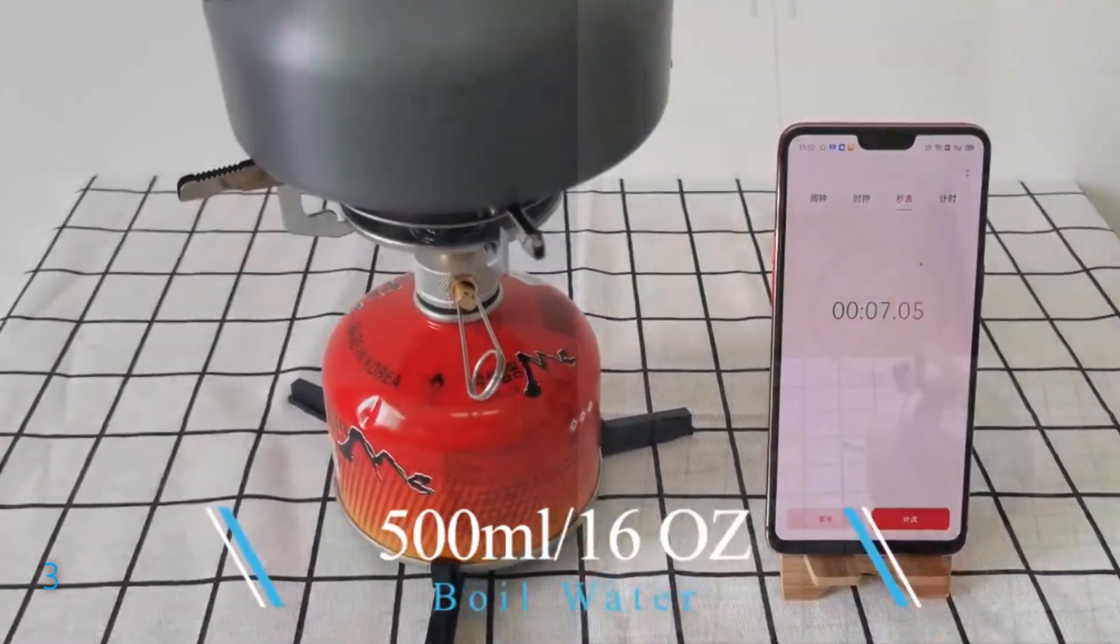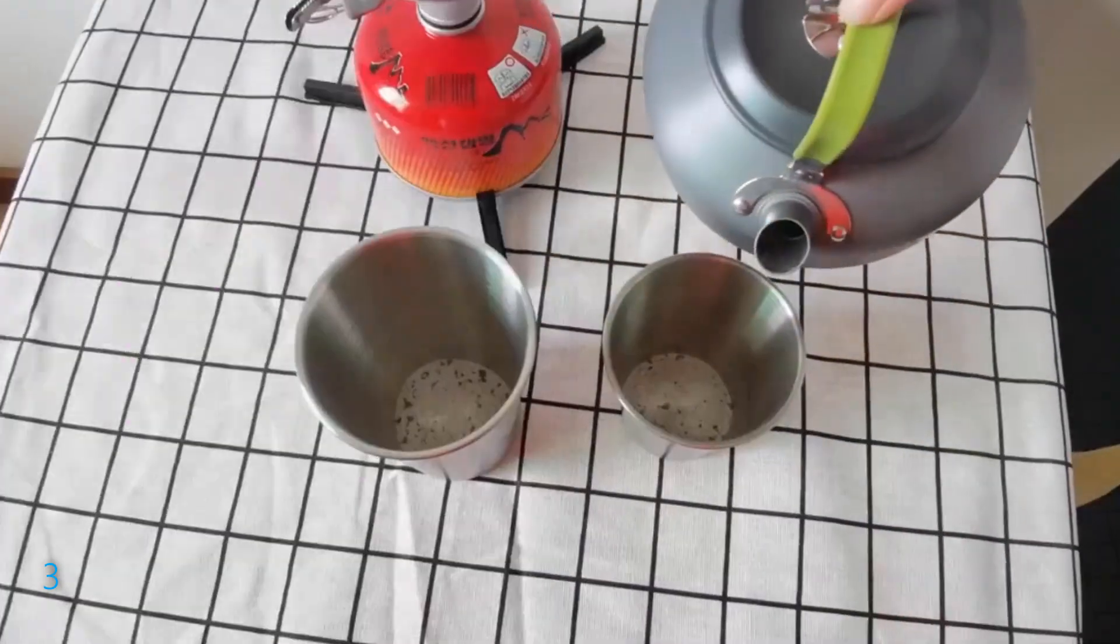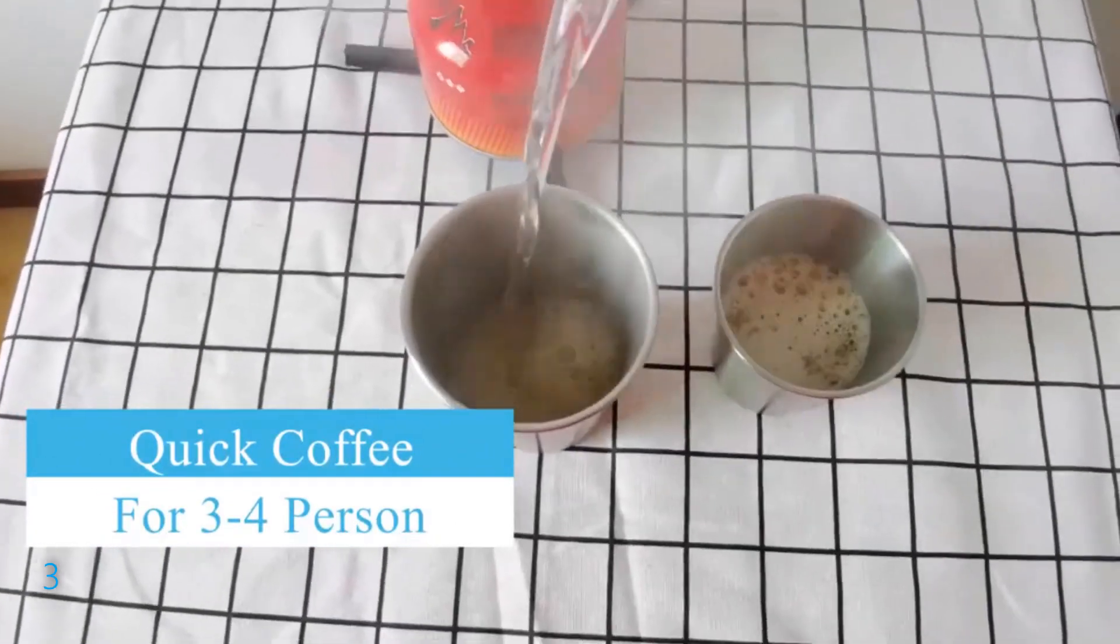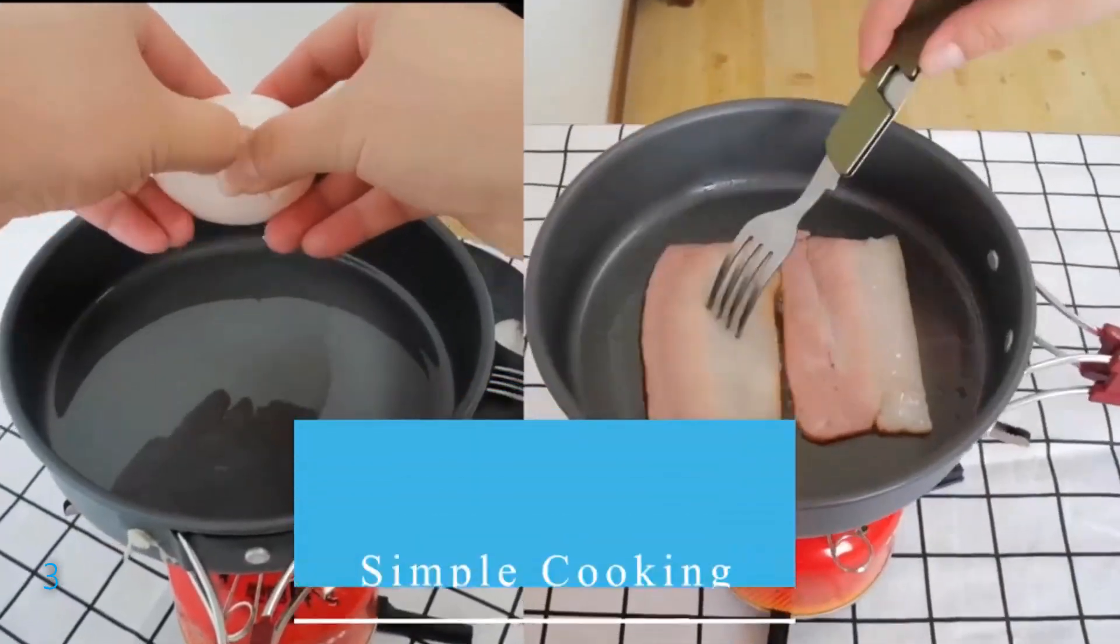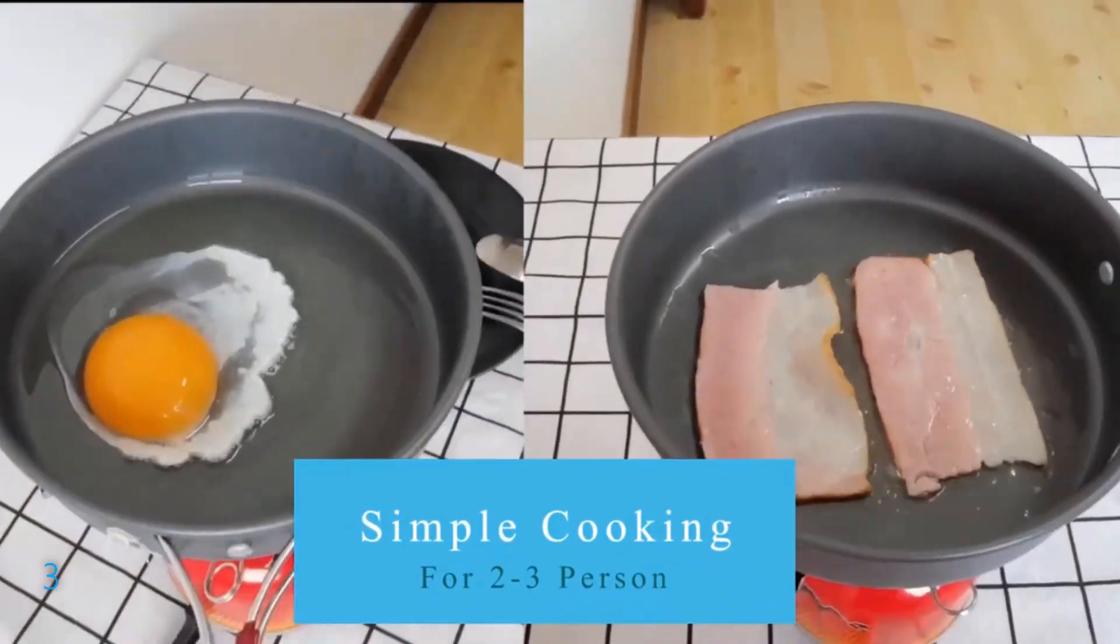Stability is guaranteed with its sturdy platform and wide pot supports, minimizing the risk of tipping. And with its precise flame adjustment feature, you can easily control the heat output for perfectly cooked meals every time. Don't compromise on quality during your outdoor adventures. Choose the Codbler Portable Camping Stove Burner for a reliable cooking companion.